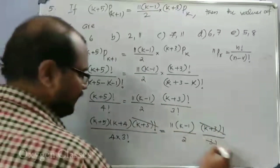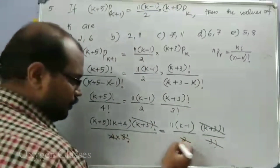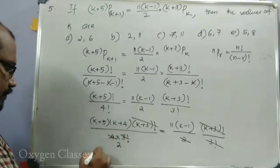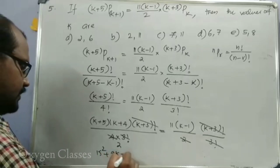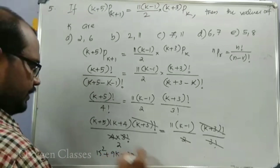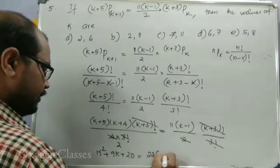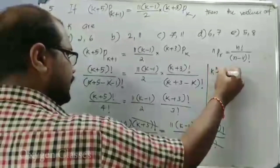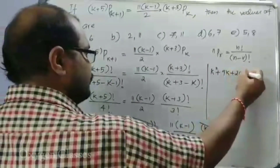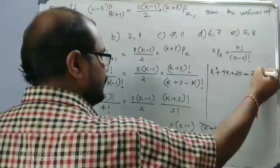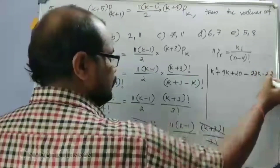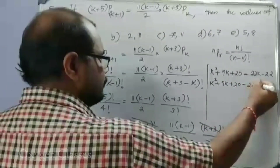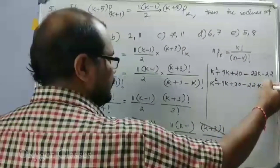Cancelling k plus 3 factorial from both sides, we get a quadratic equation: k squared plus 9k plus 20 equals 2 times (22k minus 22), that is k squared plus 9k plus 20 equals 22k minus 22.